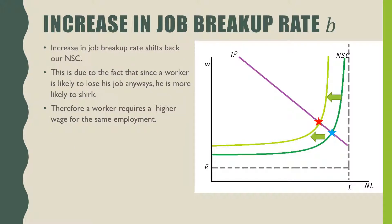For an increase in job breakup rate, this shifts back our no shirking condition. This is due to the fact that since a worker is likely to lose his job anyway, he is more likely to shirk. Therefore a worker requires a higher wage for the same employment. Again we see a shift in equilibrium from the blue star to the red star, dropping employment at that level and increasing the wage.